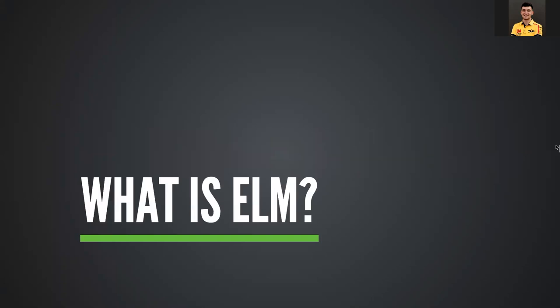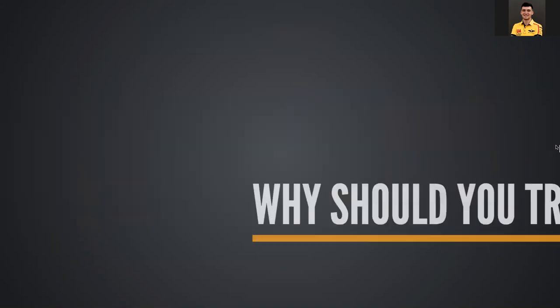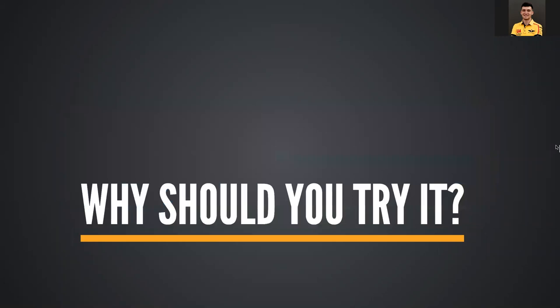So what exactly is Elm? The main website of the language says Elm is a delightful language for reliable web applications. Elm is a language that compiles to JavaScript and is meant for creating web applications. You cannot create backend systems or native mobile applications with it — only web applications. So it may be competition for well-known web frameworks like React, Angular, Svelte, Vue, etc.